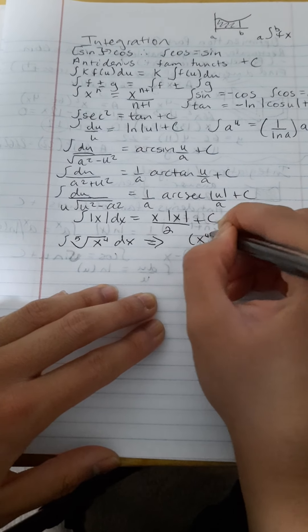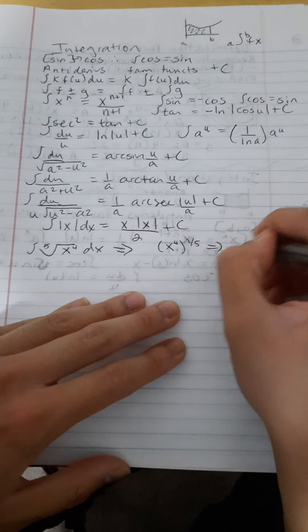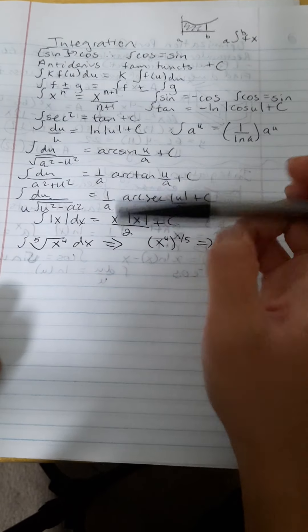Okay, so when we put this in a different form, it'll be x to the 4th to the 1/5th, which would be x to the 4/5. Okay, now we could apply the power rule of integration,